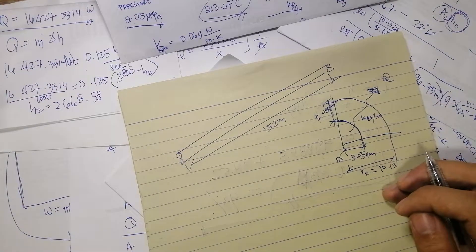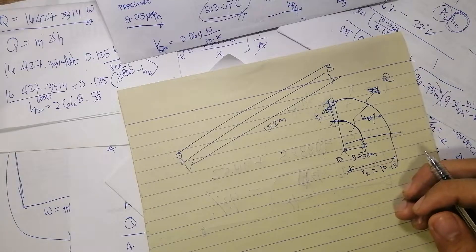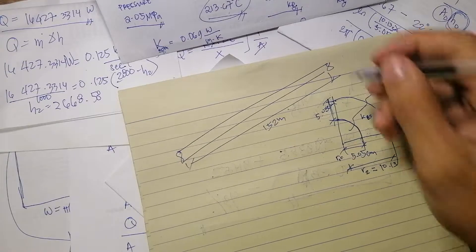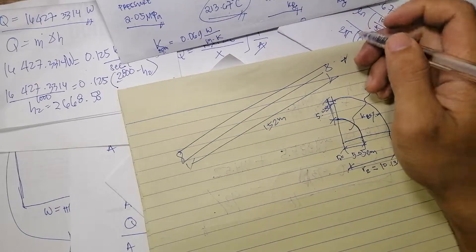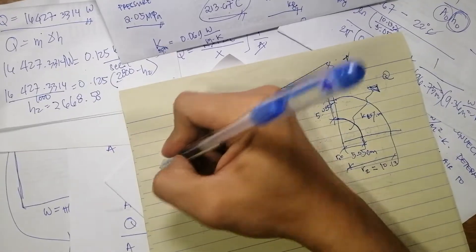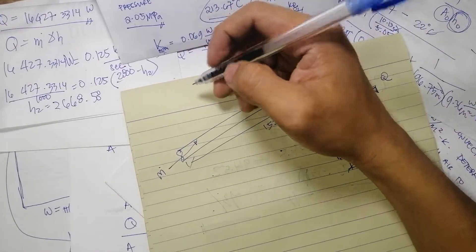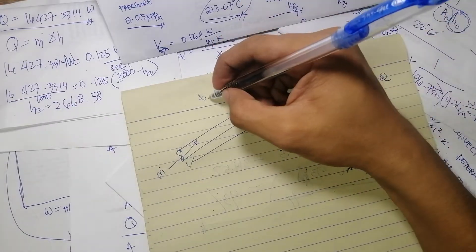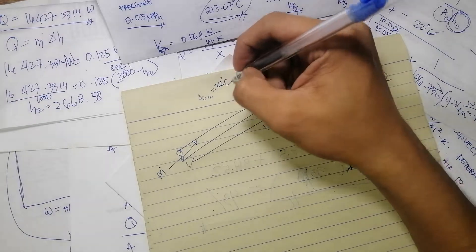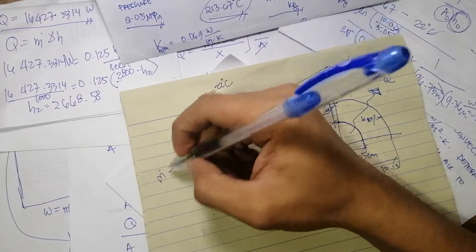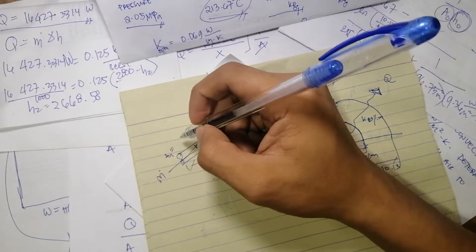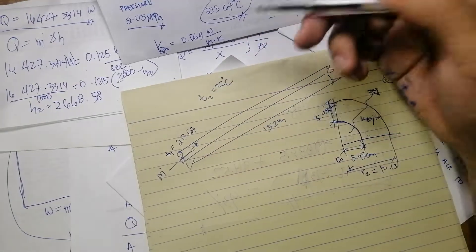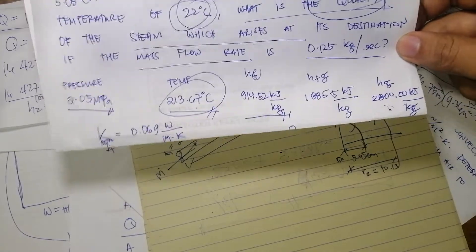So how are we going to solve for the steam, or the quality of the steam which arises at its destination when it goes out here? We have an ambient temperature of air which is 22 degrees centigrade. We have the temperature of the steam passing through, which is equal to 213.67 as per steam table.